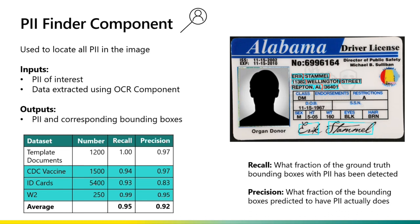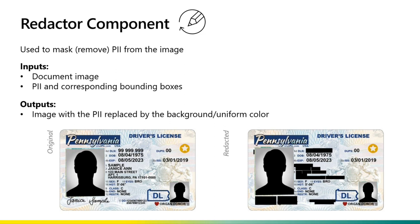The final component of the first layer is the Redactor component. After we've identified all PII within the document, the Redactor component completely removes it. Importantly, we are not just adding a layer on top for masking — we are actually changing the pixel values within the image itself, so it is not possible to go back and recover this information. Because the PII Finder is told what it is looking for, we have the ability to detect and redact any type of PII field.